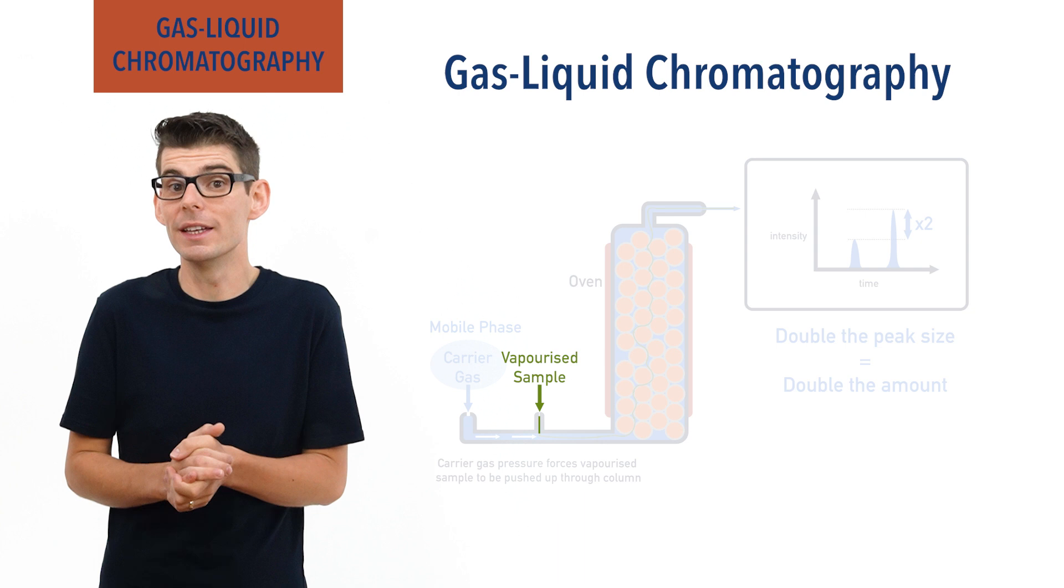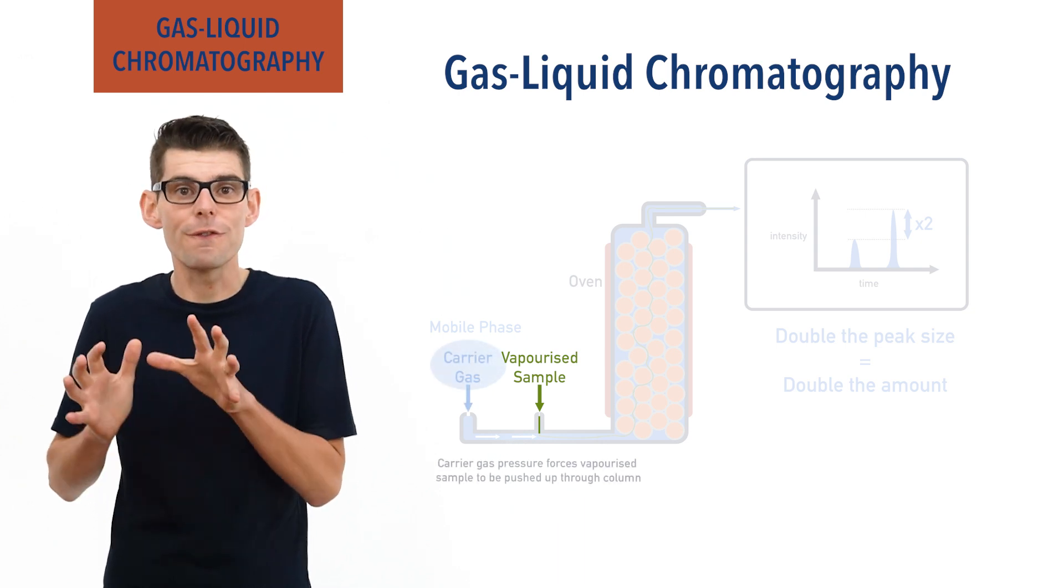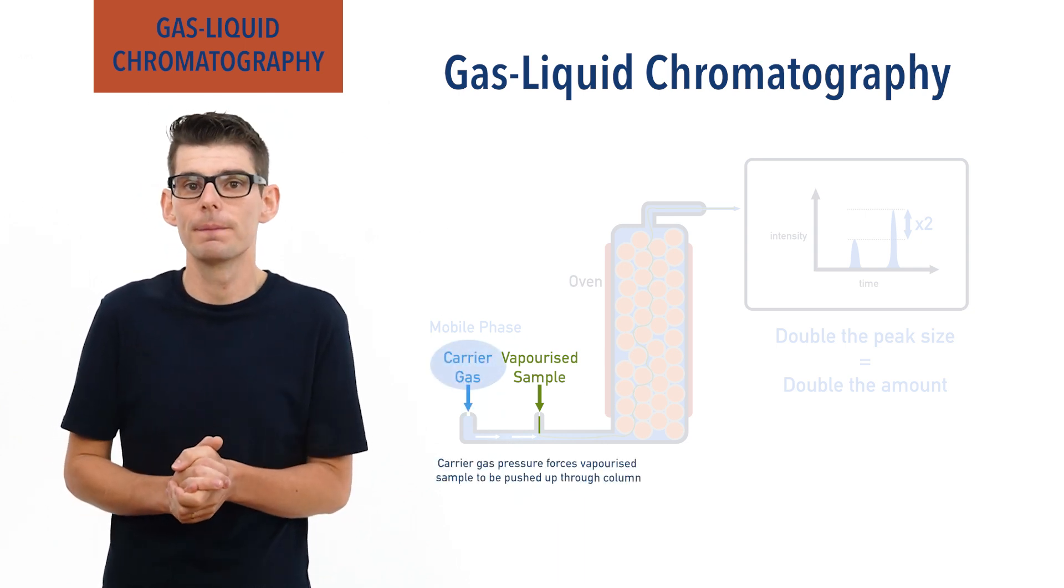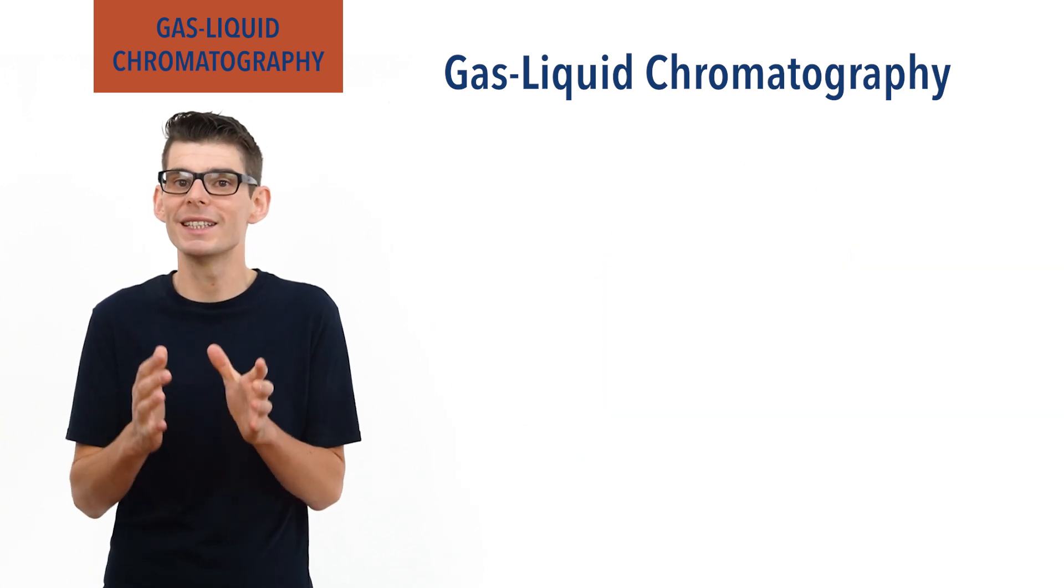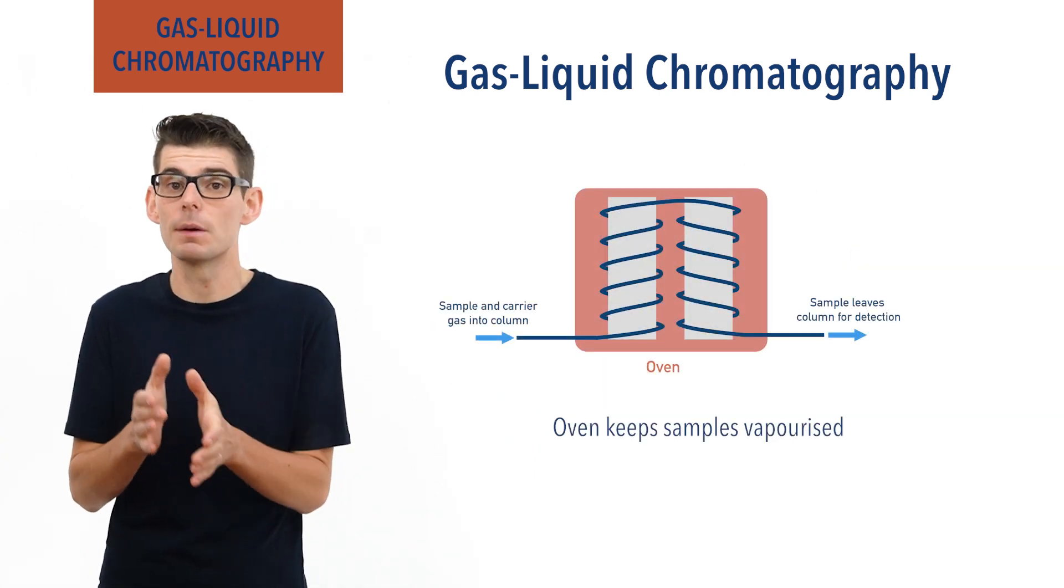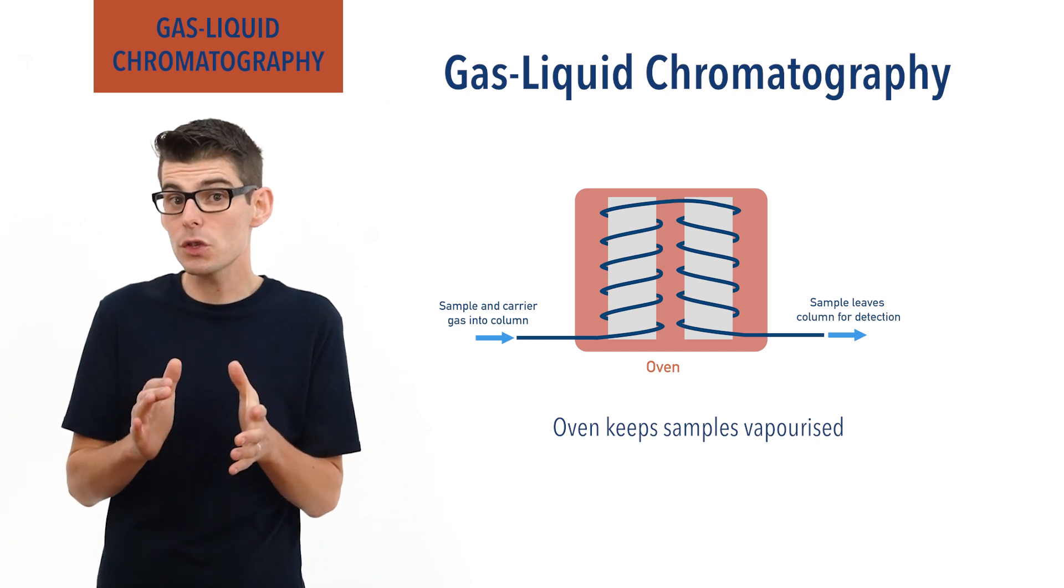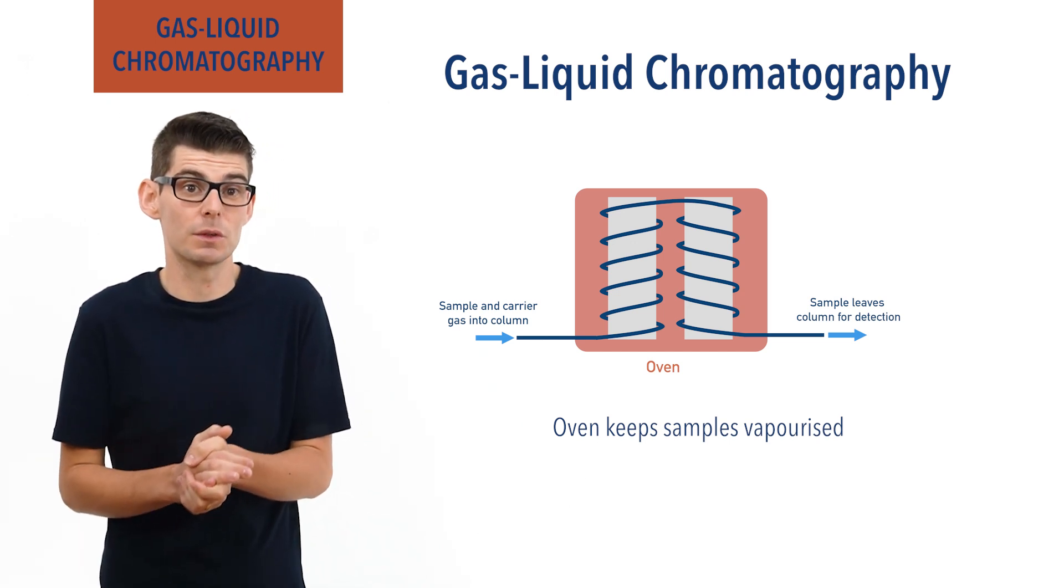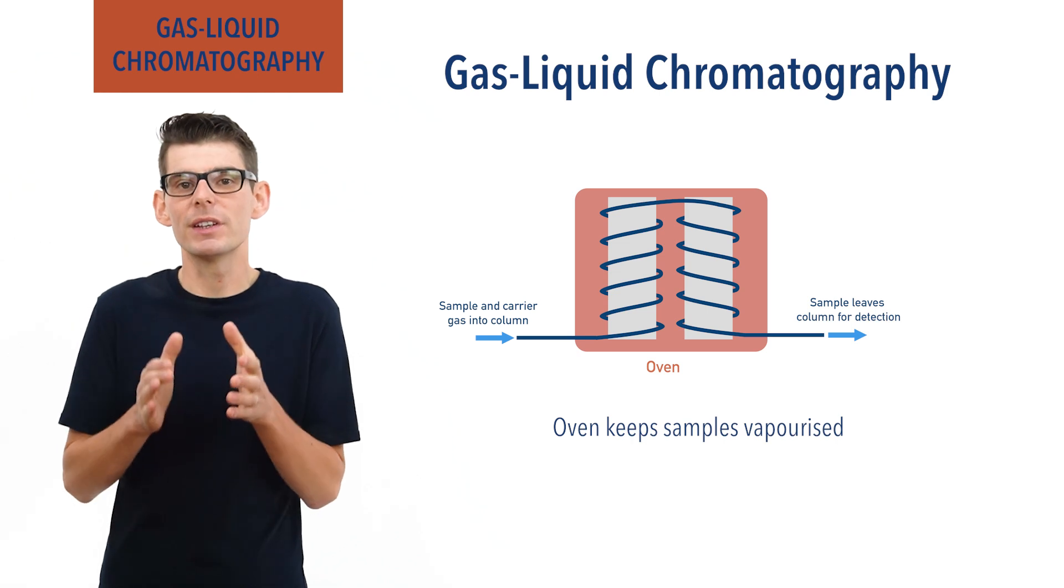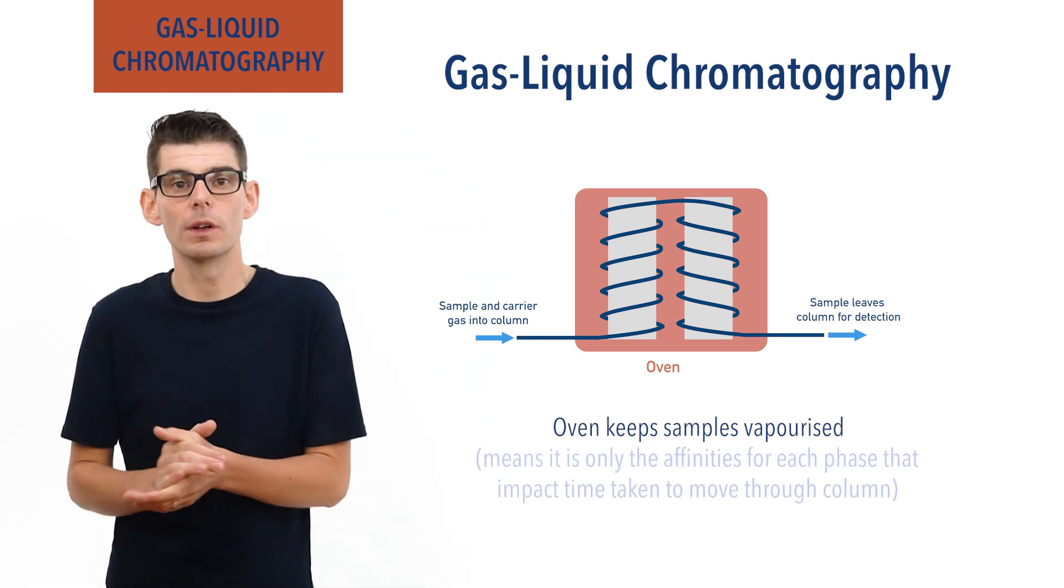As we mentioned, the inert gas is under pressure forcing it through the column. To ensure the sample stays vaporized, the column is coiled inside an oven to keep the sample boiling. This ensures it's the affinity for each phase and not simply the physical state of the substances that determine how long it will take them to move through the column.